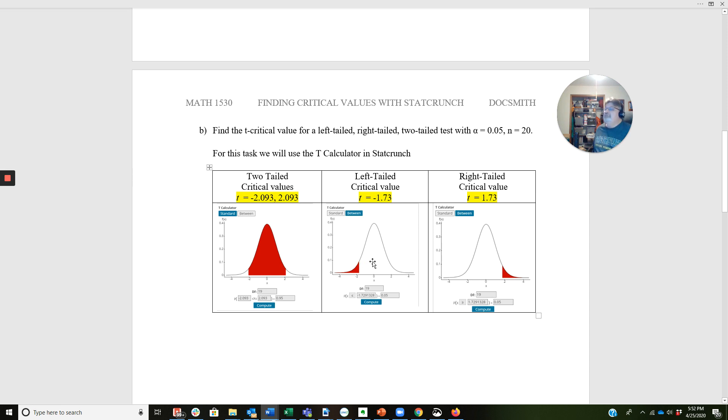Moving on to a left-tailed test. We did the between here. Notice I've clicked the standard up here. The degrees of freedom is still 19. Alpha now 0.05. I've changed the direction of my inequality sign to point to the left. And we get a negative 1.73. So you notice it's slightly different from the Z-scores.